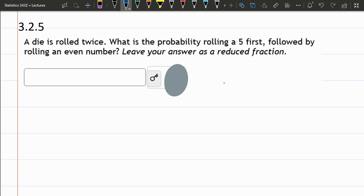And we want to know the probability of rolling a 5, followed by even. So it's the probability of 5, these are independent, so we get to multiply them.